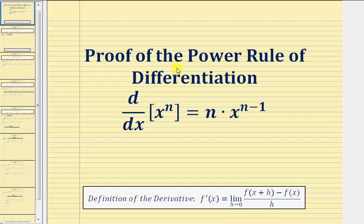Welcome to a proof of the Power Rule of Differentiation, which is the derivative of x raised to the power of n with respect to x equals n times x raised to the power of n minus one.